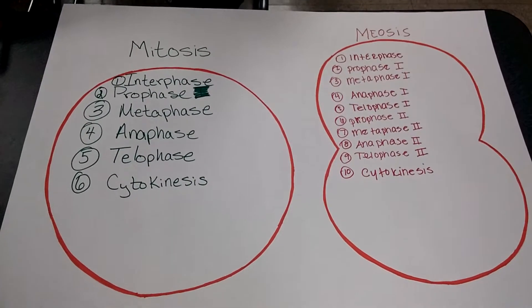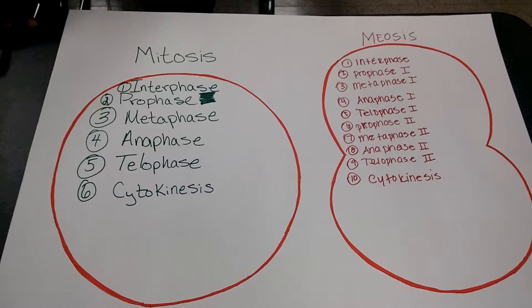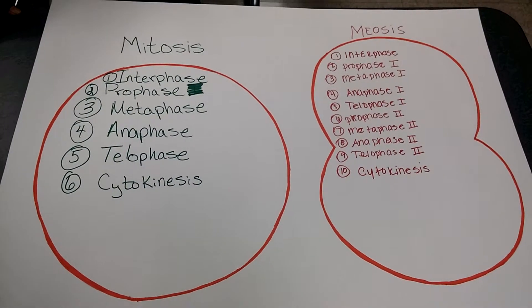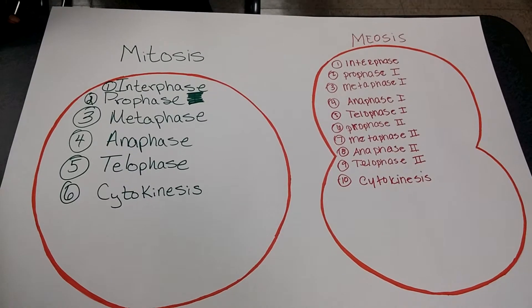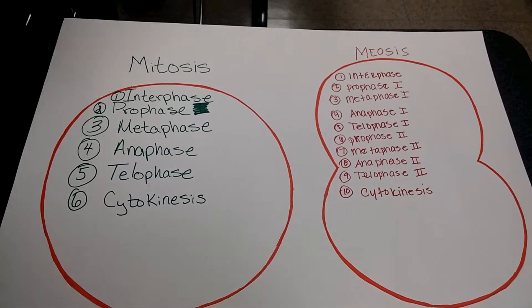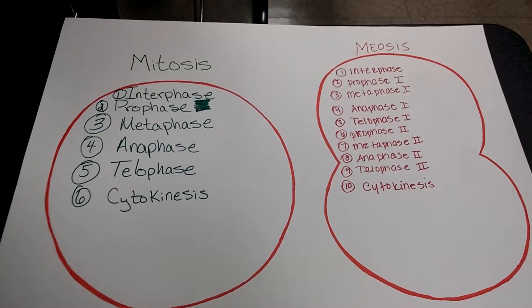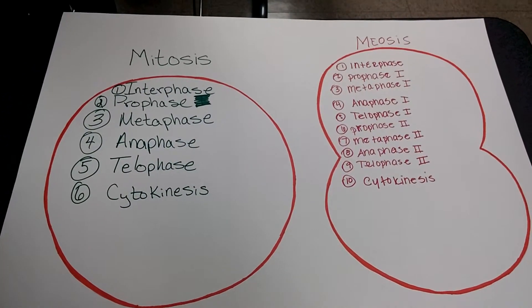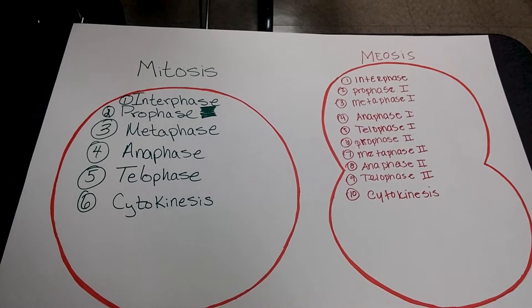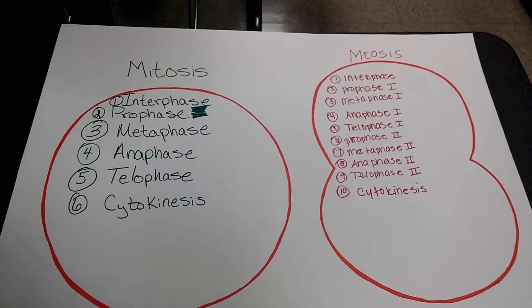Another difference is that mitosis produces somatic cells while meiosis produces sex cells. In mitosis there is identical genetic material, while in meiosis there is a possibility for unique combinations of genetic material.